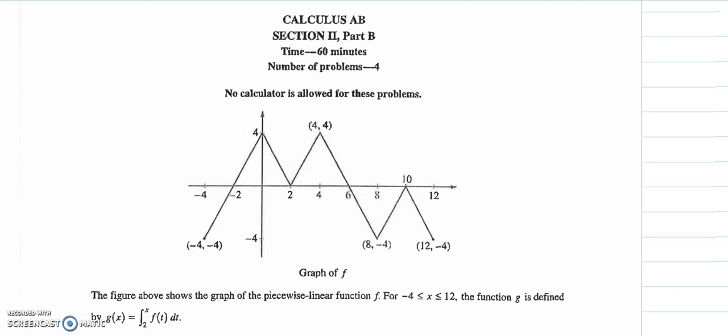Hi Calcabee, this is page 22 in your binder. The figure above shows the graph of the piecewise linear function f for negative 4 to 12. The function g is defined by g equals the integral from 2 to x of f(t) dt.